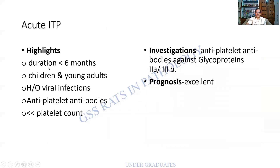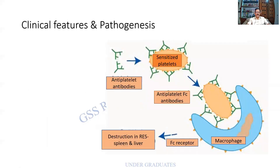The highlights of acute ITP: duration is less than six months; it is more common in children and young adults; it can follow viral infections; anti-platelet antibodies are found; and there is a marked reduction in platelets. Investigations include looking for anti-platelet antibodies against glycoproteins 2A and 3B. The prognosis is excellent — with supportive treatment, patients recover. This form is more commonly seen in children.